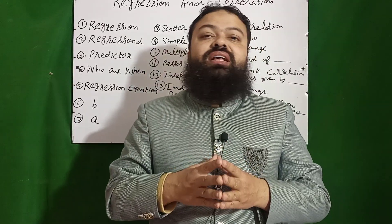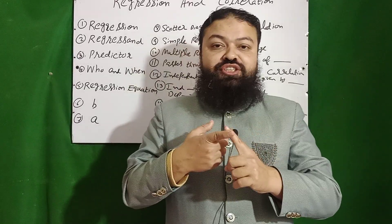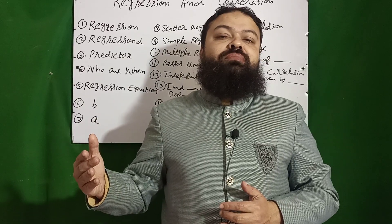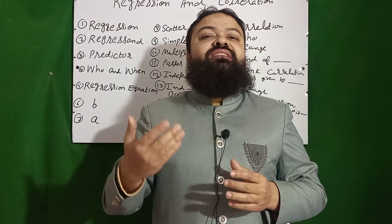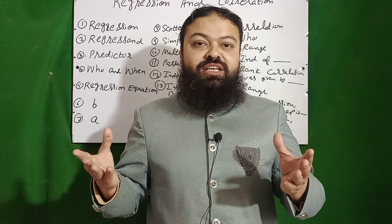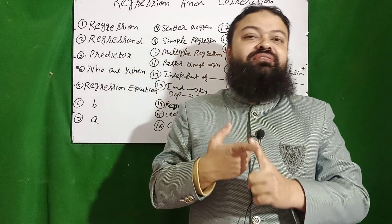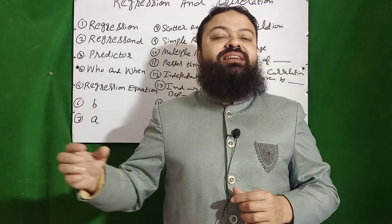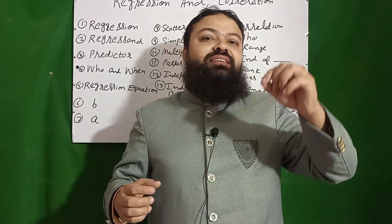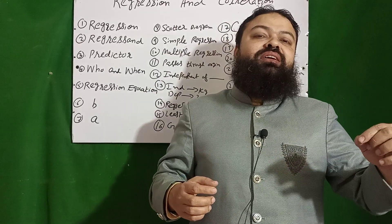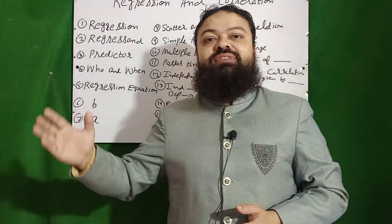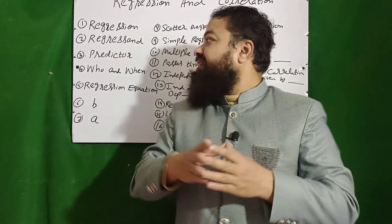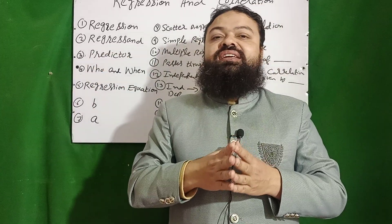Number one: what is regression? Regression is where we check the dependence of one variable on one or more independent variables. For example, wheat is our major crop sown all over Punjab. Its production is our dependent variable, and it depends upon the quantity of seed, which is the independent variable. If we want to estimate the value of wheat production using seed quantity, that is regression.